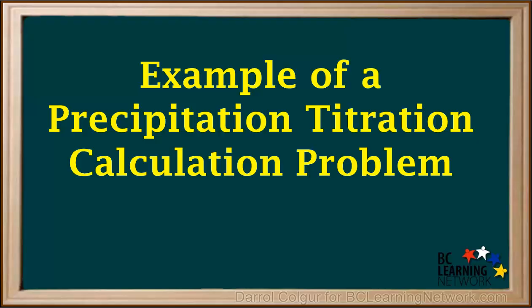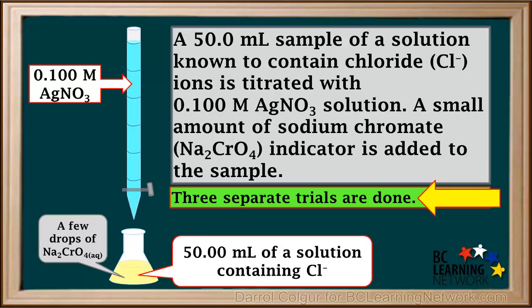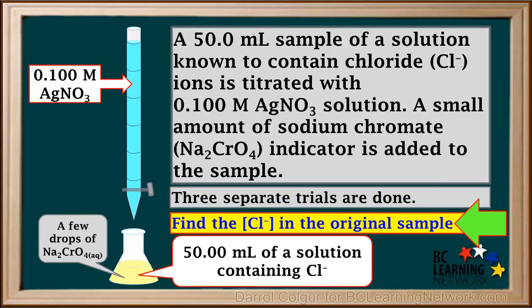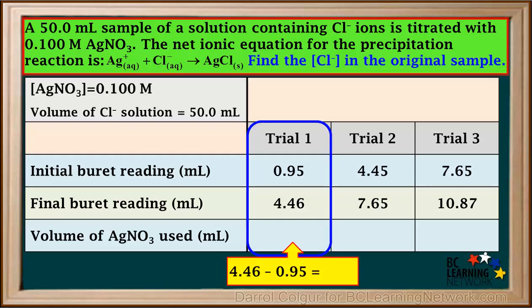Let's do an example precipitation titration question. A 50 milliliter sample of a solution known to contain chloride, or Cl⁻ ions, is titrated with 0.100 molar AgNO3 solution. A small amount of sodium chromate is added to the sample as an indicator. Three separate trials are done. We're asked to find the concentration of Cl⁻ in the original sample. The results are recorded in a table like this.